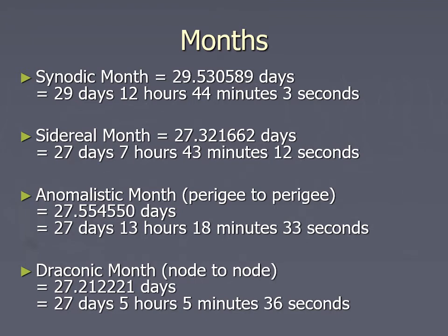There are several different cycles that repeat with the moon. One of these is the cycle of phases — lining up with the sun until lining up again — that's about 29 and a half days. This is what they used to refer to as just 'the month.' We now call this the synodic month.